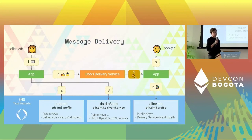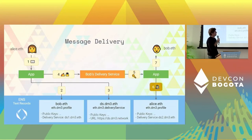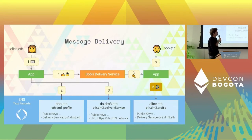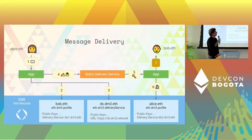Then the message is signed, encrypted, and sent to Bob's delivery service. The delivery service will push the message to the app. The app will decrypt it and look for the profile of Alice — that's needed because the signature needs to be checked. And if the signature is fine, Bob can then read the message.